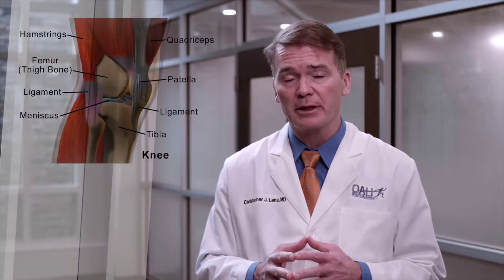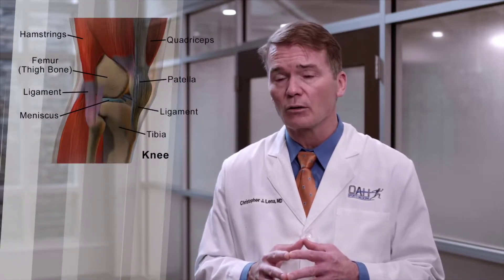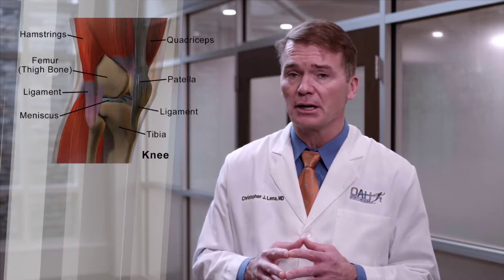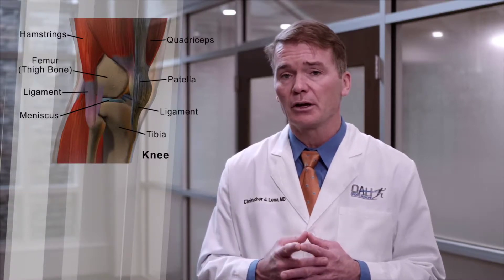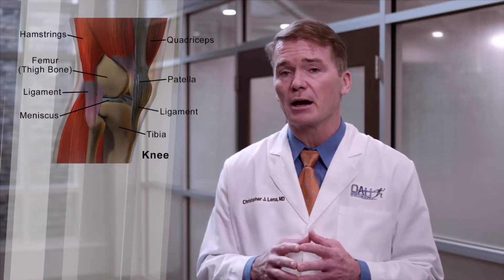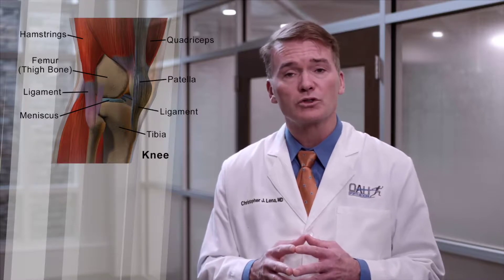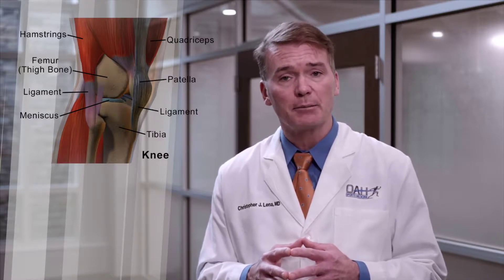The first component is going to be anatomy — the anatomy of the knee. It is a hinge joint, so there is a femoral component that rides on the tibia and there's a patella in front. Those are the three joints that make up the knee. There are multiple stabilizing ligaments: on the inside there's the medial collateral ligament, and the lateral collateral ligament on the outside.